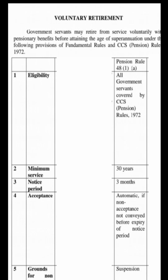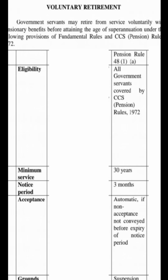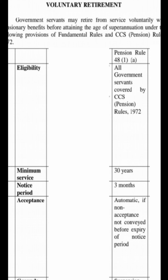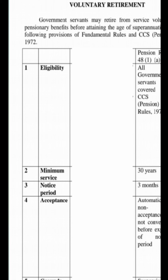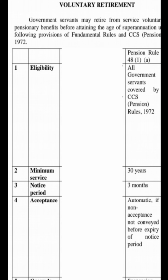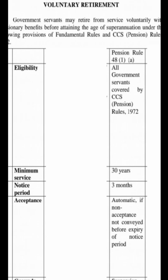According to Pension Rule 48A: Eligibility covers all government servants covered by CCS Pension Rules 1972. Minimum service: 30 years. Notice period: 3 months. Acceptance: Automatic if non-acceptance is not conveyed before expiry of notice period. Grounds for non-acceptance: Suspension.